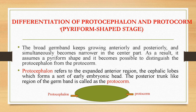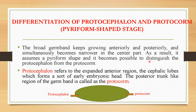The next step is differentiation of protocephalon and protocorm, also known as the pyriform-shaped stage. The protocephalon is the expanded anterior region or cephalic lobes which forms the early embryonic head. The protocorm is the posterior trunk-like region of the germ band. The germ band continues to grow anteriorly and posteriorly, while simultaneously the central part becomes much narrower. As a result, it assumes a pyriform shape — hence it is called the pyriform-shaped stage. At this stage it is possible to distinguish the protocephalon from the protocorm.